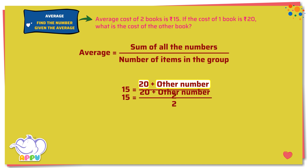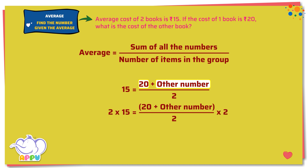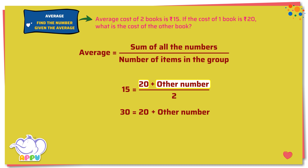So: 15 equals 20 plus the other number, divided by 2. Let's simplify this. First, multiply both sides by 2. We get 2 times 15 equals 20 plus the other number, which is 30 equals 20 plus the other number.